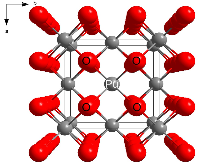As with all plutonium compounds, it is subject to control under the Nuclear Non-Proliferation Treaty. Plutonium metal spontaneously oxidizes to PuO2 in an atmosphere of oxygen. Plutonium dioxide is mainly produced by calcination of plutonium oxalate at 300 degrees Celsius. Plutonium oxalate is obtained during the reprocessing of nuclear fuel as plutonium is dissolved in HNO3·HF.